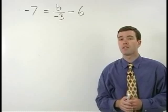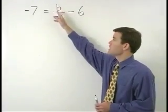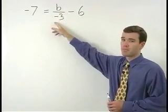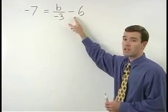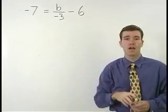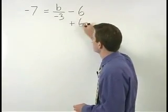First, isolate the term containing B, which in this case is B over negative 3. To isolate B over negative 3, we must get rid of this minus 6, and we do that by adding 6 to both sides of the equation.